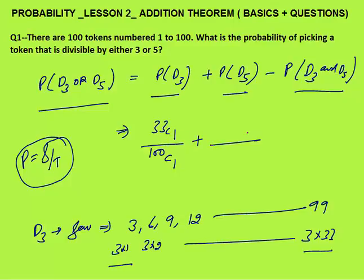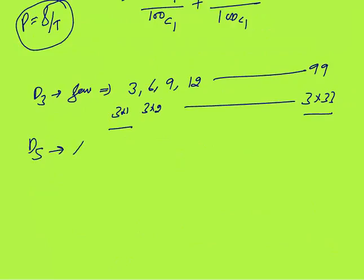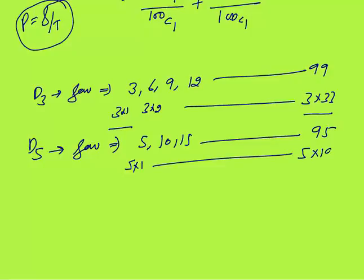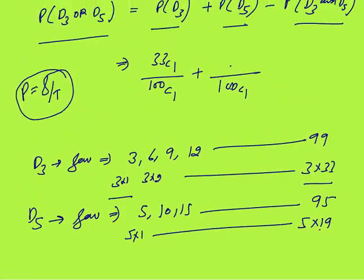Plus, same way, the probability that the token number is divisible by 5. Total cases again = 100C1. Token numbers divisible by 5 could be 5, 10, 15 up to 95, that is 5×1 to 5×19 — so 19 token numbers are possible. Favourable cases = 19C1, because you are selecting 1 token.